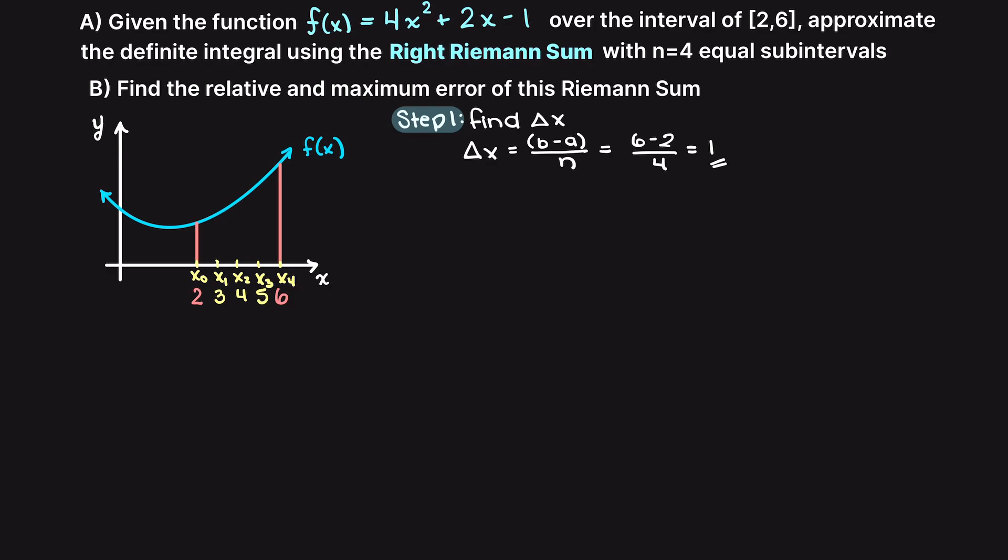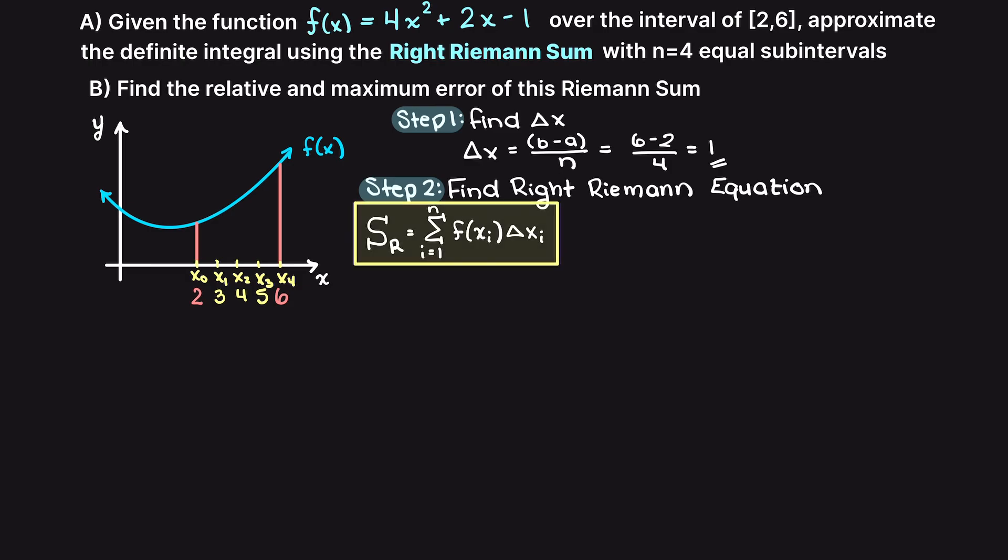Secondly, we need to develop our right Riemann sum equation to solve for this problem. To do this, we can begin with our general formula that was developed in our past Riemann sum theory video. With equal subinterval spacing, our delta x becomes a constant, and we can factor it in front of our summation term. Therefore we get the following equation.